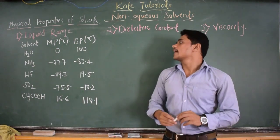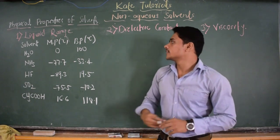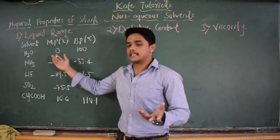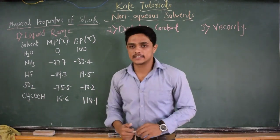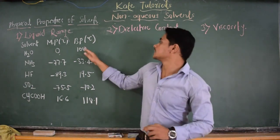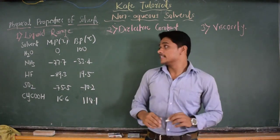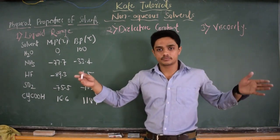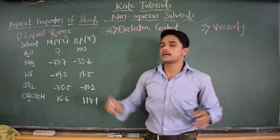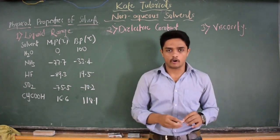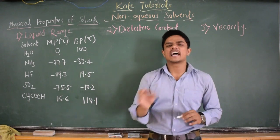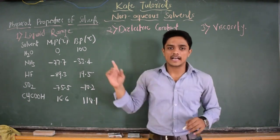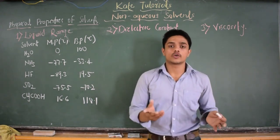The solvent H2O — its melting point or freezing point is 0 degree Celsius and its boiling point is 100 degree Celsius. It has got a large difference between melting point and boiling point. Hence, it acts as an excellent solvent, or I can say it acts as a universal solvent.